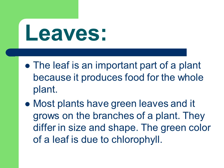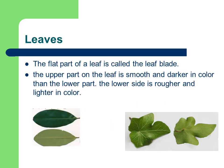Now leaves. The leaf is an important part of a plant because it produces food for the whole plant. Most plants have green leaves and they grow on the branches of a plant. They differ in size and shape. The green color of the leaf is due to chlorophyll. The flat part of the leaf is called the leaf blade. The upper part of the leaf is smooth and darker in color than the lower part. The lower side is rougher and lighter in color.